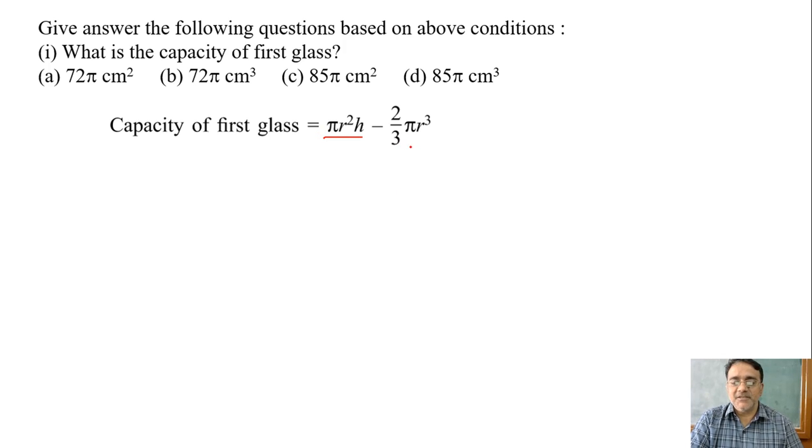That is πr²h minus 2/3 πr³. What can you take common? πr². Right. Taking πr² common, we get h minus 2/3 r. Now substitute the values of r and h; all answers are in terms of π. The value of r is 3 and h is 10.